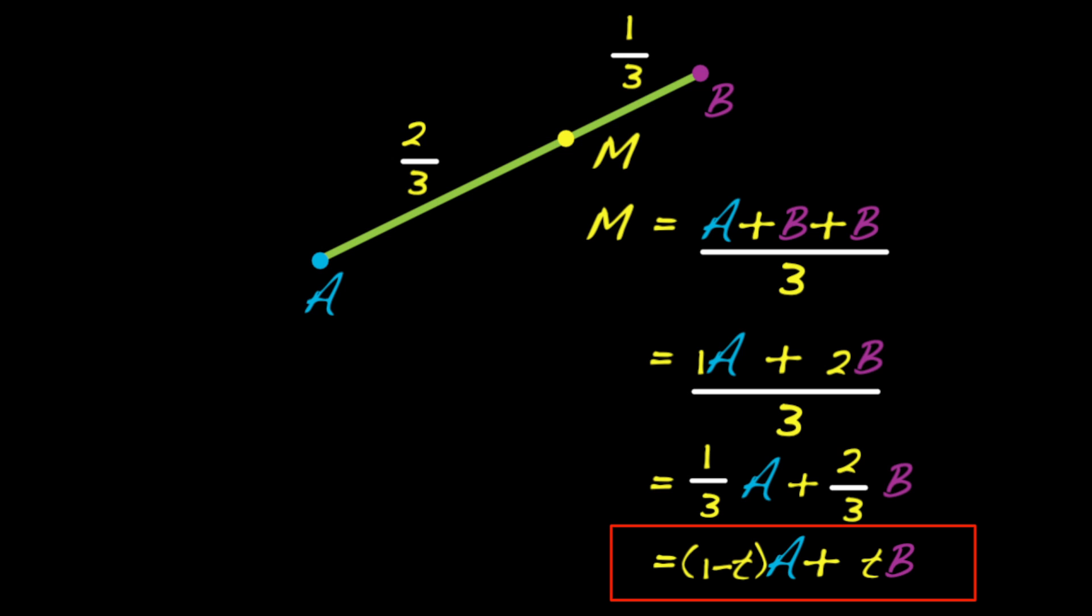So my expression now is one minus T times A plus T times B. That's the algebra of this generalized situation. The geometry is that this two-thirds gets replaced with a T, and this one-third gets replaced with a one minus T.